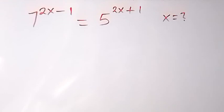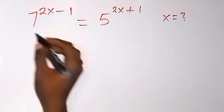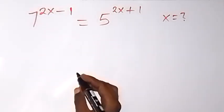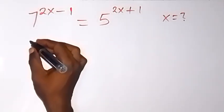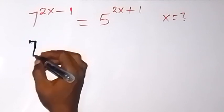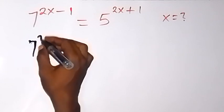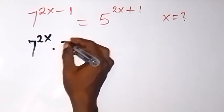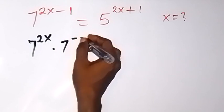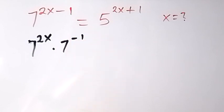Thank you for joining us. Here we want to solve this problem, and from here we can rewrite what we have and say this is 7 raised to power 2x times 7 raised to power minus 1.